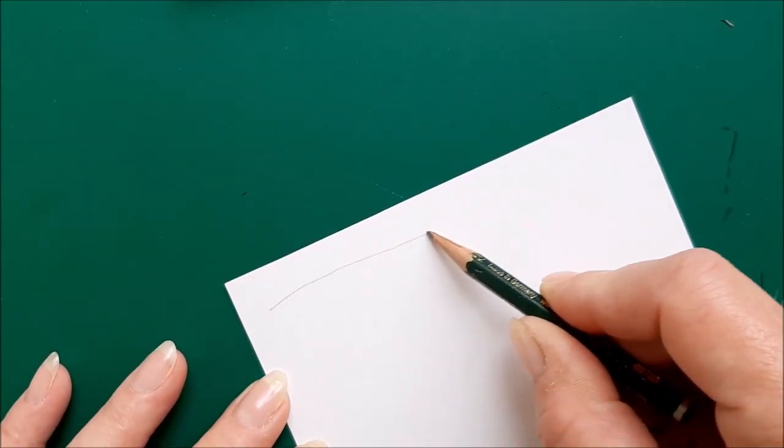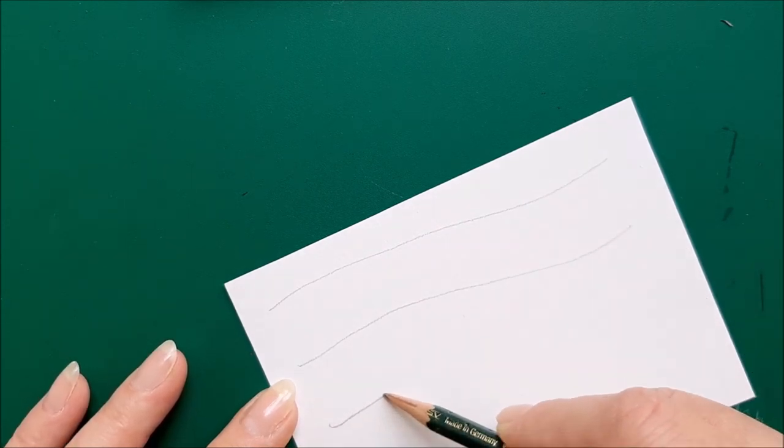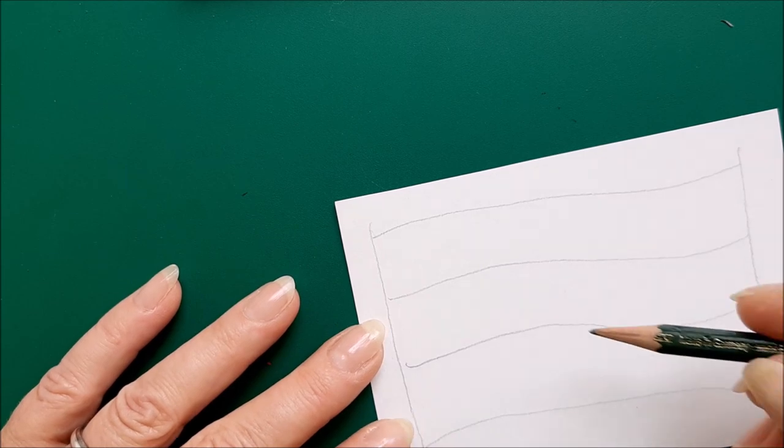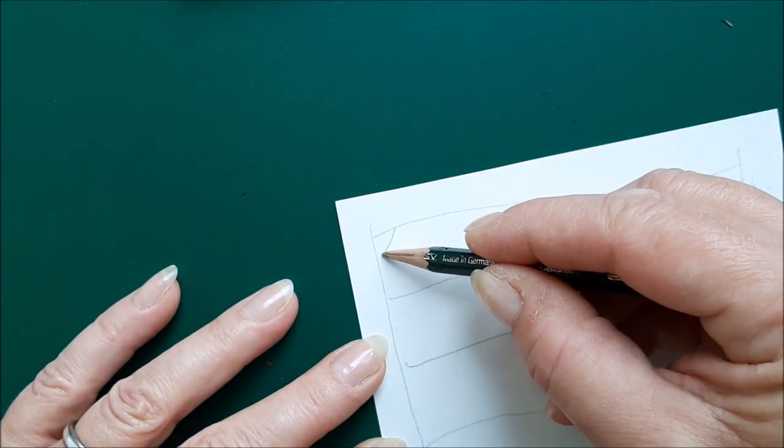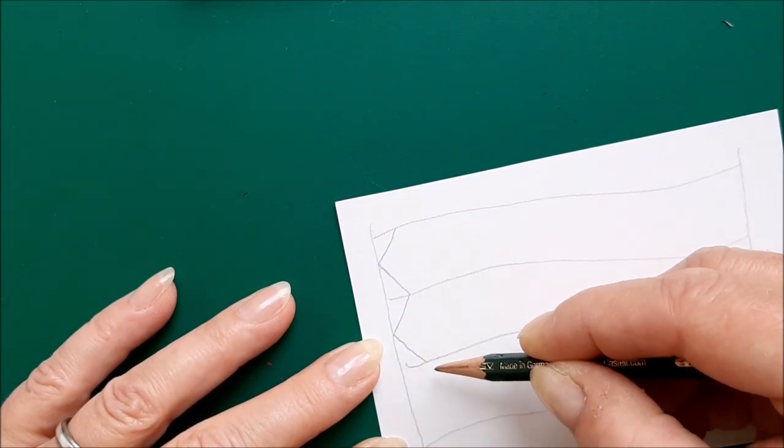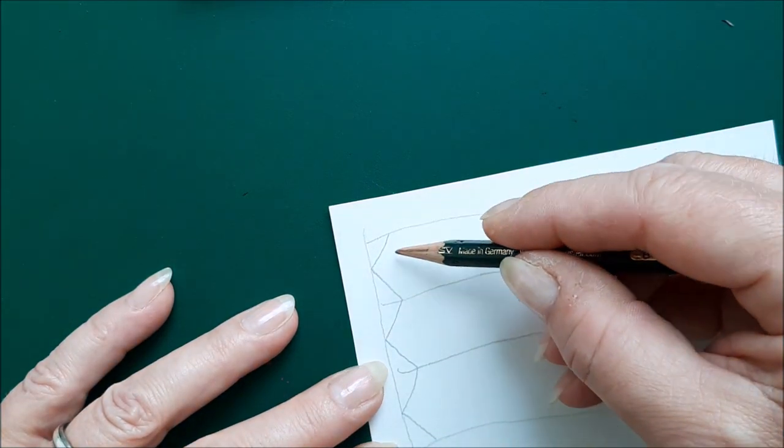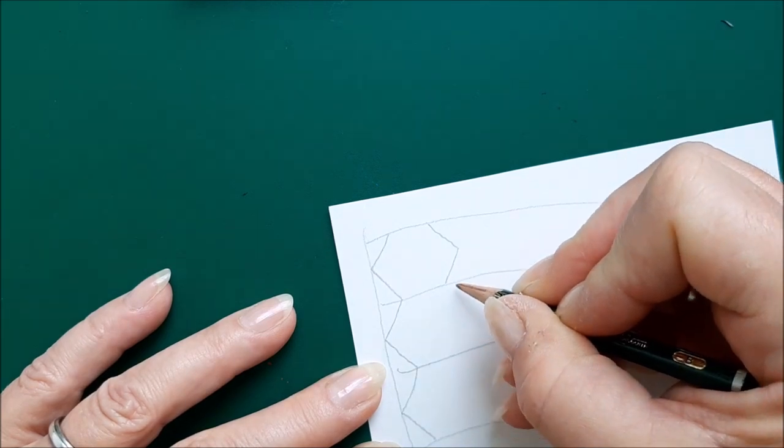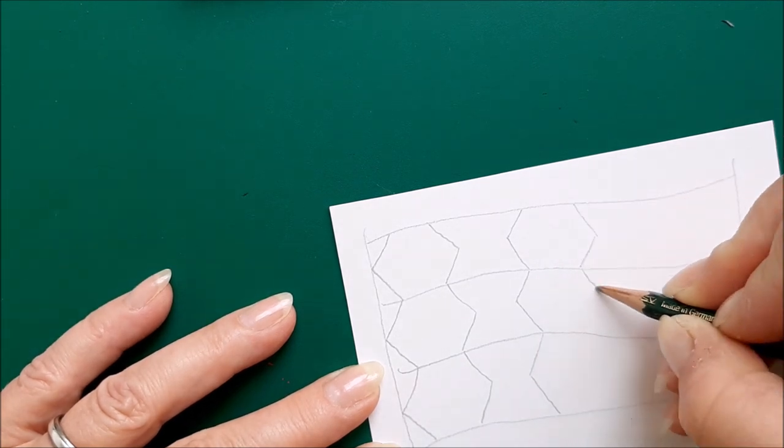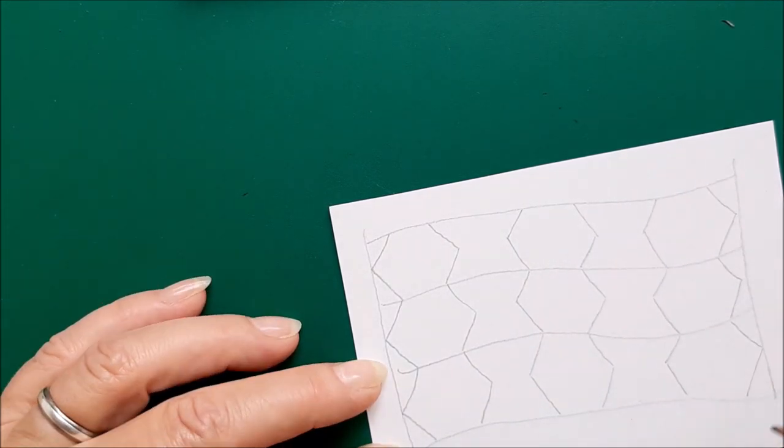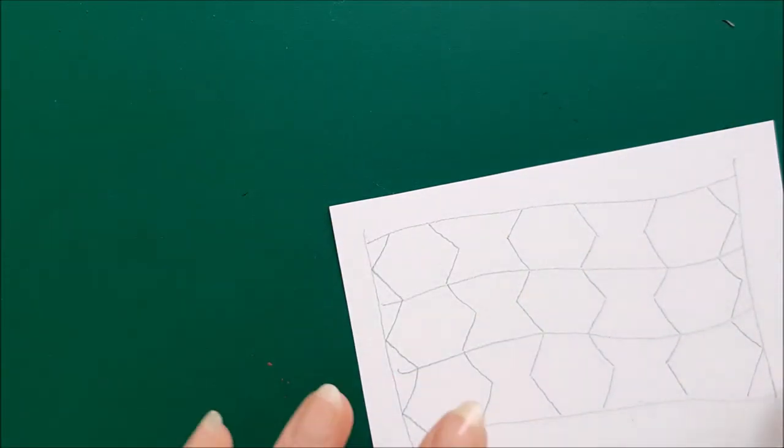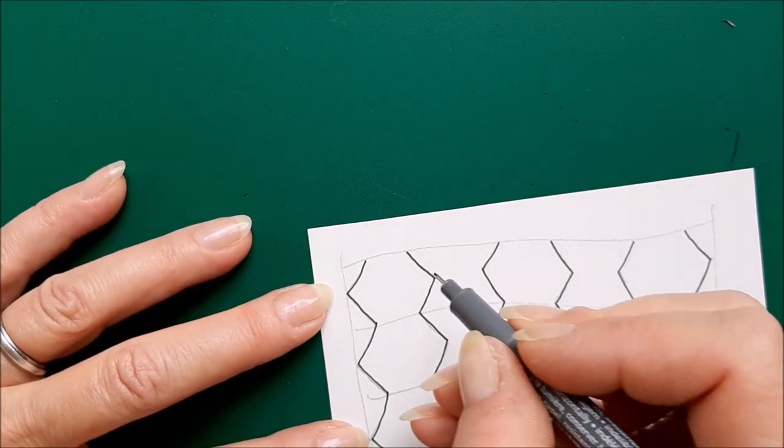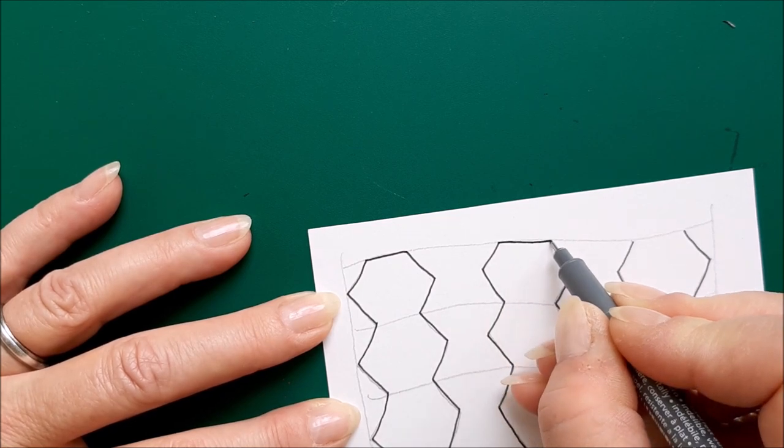It starts off with drawing in a hexagon and for me the easiest way is to draw it between some lines. It starts off with a zigzag line and about this measure we mirror the shape. Now let's get my inky pen and let's turn it into hexagons by adding the horizontal lines.